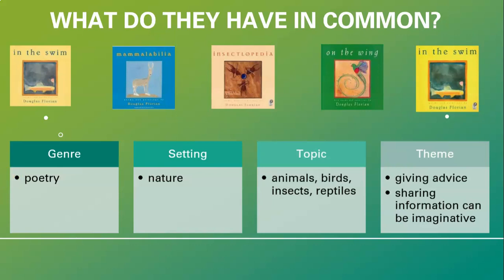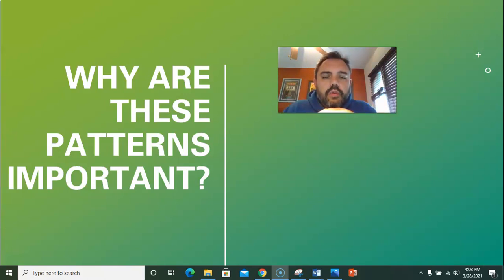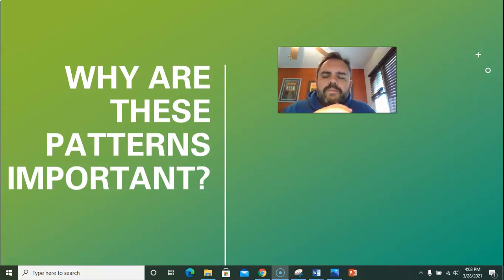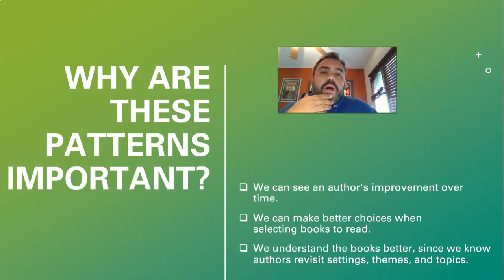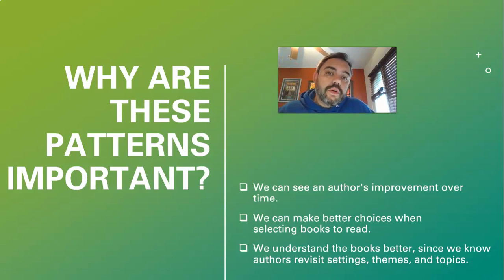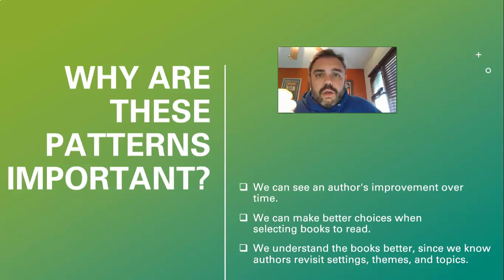We know this is going to be pretty important to us. So my next question is, why are these patterns important? Why are patterns in authors' books important? And why is it important for us to recognize them — to be able to spot them with our keen reading eyes? First and foremost, we can see an author's improvement over time. If I see Mr. Florian has written a book in the year 2000 and I generally enjoy it, but then I read another book of his written in 2010, I can see how it's gotten better. And if he puts out a new book in 2021, I can see how he has progressed as an author and appreciate and critique his craft a little bit better. That is why recognizing patterns is important.